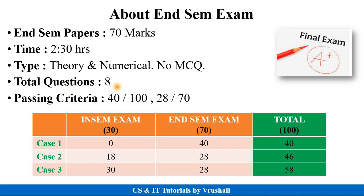There are a total of 8 questions in your paper including optional questions. Now, regarding passing criteria, there are two passing criteria. Your subject is total 100 marks — 30 marks for the in-sem exam and 70 marks for the end-sem exam. So out of 100, 40 marks are necessary, and out of 70 end-sem marks, 28 marks are compulsory.